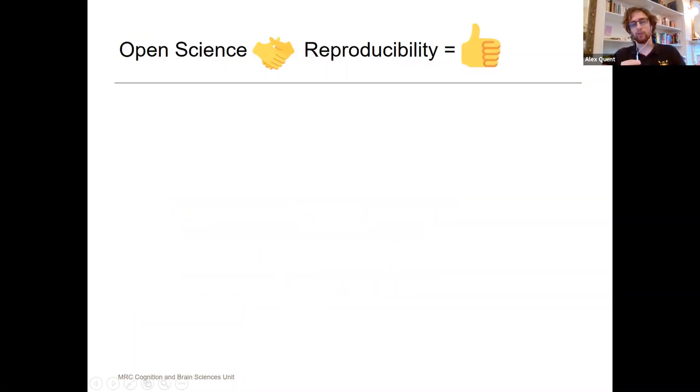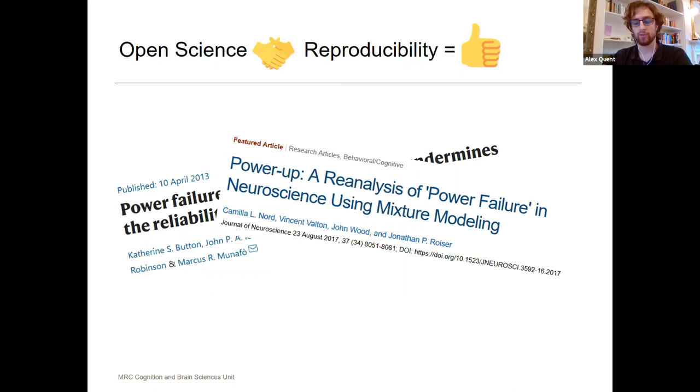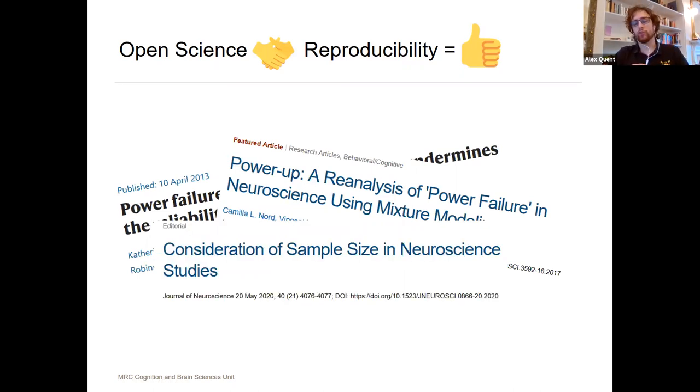Obviously, open science and reproducibility really need to come together in order for us to have good science. One big discussion that went through the field was the whole discussion over replication crisis, low power, and small sample sizes, which is at heart an issue that the evidence we are usually producing in our publications is not very strong.